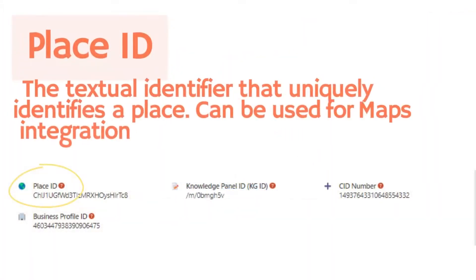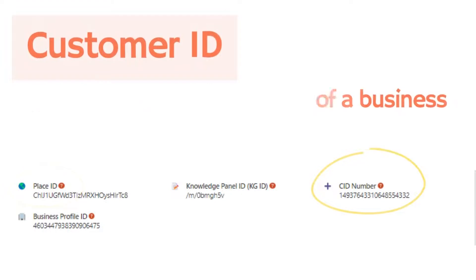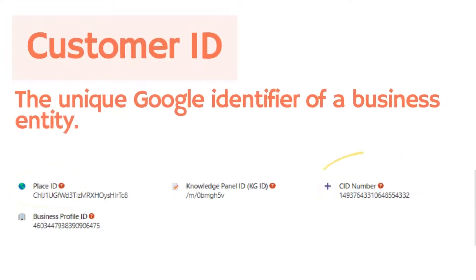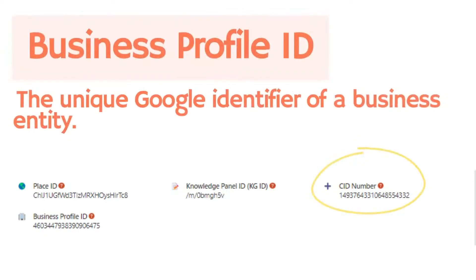This includes the place ID, which you can use for Google Maps integrations and API calls, and the customer ID, which you can use as an identifier of your Google Ad account.